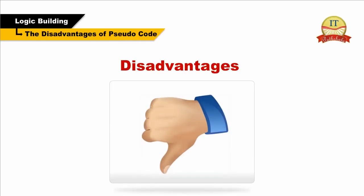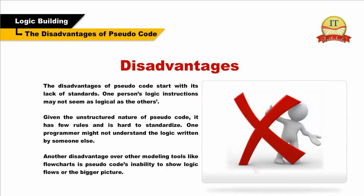Disadvantages of pseudocode: The disadvantages of pseudocode start with its lack of standards. In other words, one person's logic instructions may not seem as logical to others. Given the unstructured nature of pseudocode, it has few rules and is hard to standardize. One programmer might not understand the logic written by someone else.